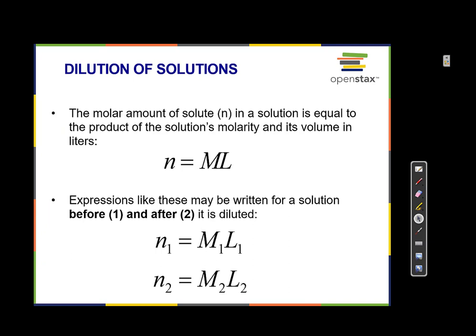The amount of moles in a solution — lowercase n — equals molarity times volume. This is because molarity equals moles per liter, so if you multiply moles per liter times liters, that equals moles. So n equals M times V.